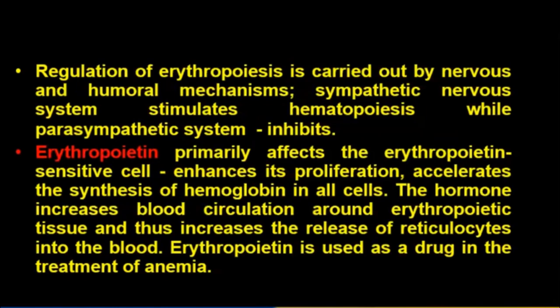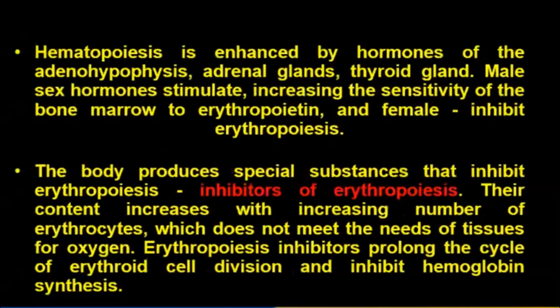Regulation of erythrocytes is carried out by nervous and humoral mechanisms. The sympathetic nervous system stimulates hematopoiesis while the parasympathetic system inhibits it. Erythropoietin enhances proliferation and accelerates synthesis of hemoglobin. The hormone increases blood circulation around erythropoietic tissue, which increases the release of reticulocytes into the blood. Erythropoietin is also used as a drug in treatment of anemia.